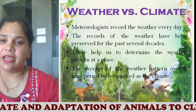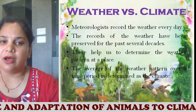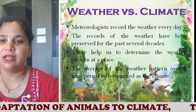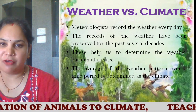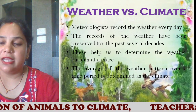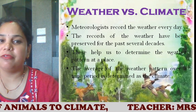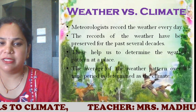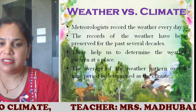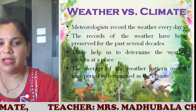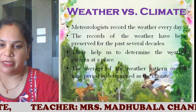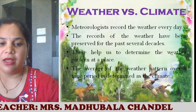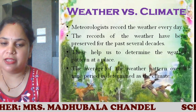So what is the difference between weather and climate? When we book tickets to a place, we look at the climate. When we have to go out for daily activities, we look at the weather. Meteorologists record the weather every day, and these records have been preserved for the past several decades. When you collect this weather data over a long span of time, it makes the climate of a place, including all the elements of weather. These help us determine the weather pattern at a place, and the average of the weather pattern over a time period is determined as the climate.